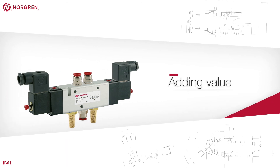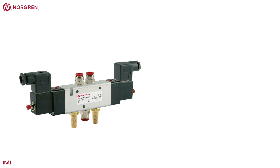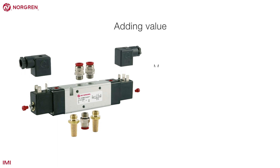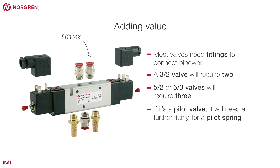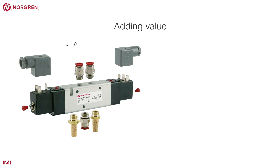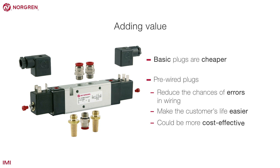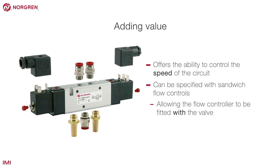With every valve sale there is the opportunity to add value for the customer. Our cross-selling initiative is all about providing customers with peripheral products to ensure they get the most from their system. Most valves need fittings to connect pipework — a 3-2 valve will require two, and 5-2 or 5-3 valves will require three; a pilot valve will need a further fitting. Every valve with an exhaust needs a silencer to stop the ingress of dirt into the exhaust ports. A solenoid will require a plug and lead — pre-wired plugs reduce the chances of wiring errors and may be more cost-effective. Flow controls offer the client the ability to control the speed of the circuit, and ISO valves can be specified with sandwich flow controls allowing the flow controller to be fitted with the valve.